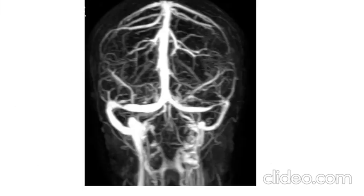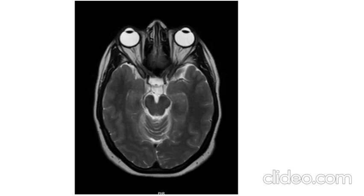Time-of-flight venography showed bilateral transverse sinus stenosis. The right transverse sinus appeared dominant compared to the left side. As only one dural venous sinus required to be opened to resolve the CSF outflow obstruction, only right-side dominant transverse sinus stenting was planned. A T2-weighted axial MRI scan showed tortuous bilateral optic nerves without any other abnormal findings.